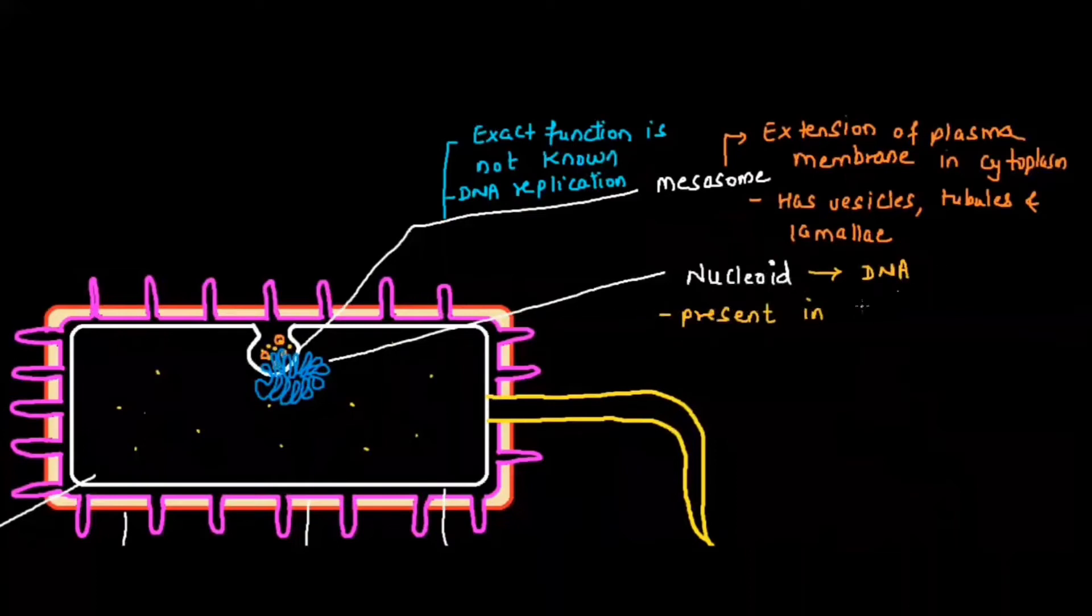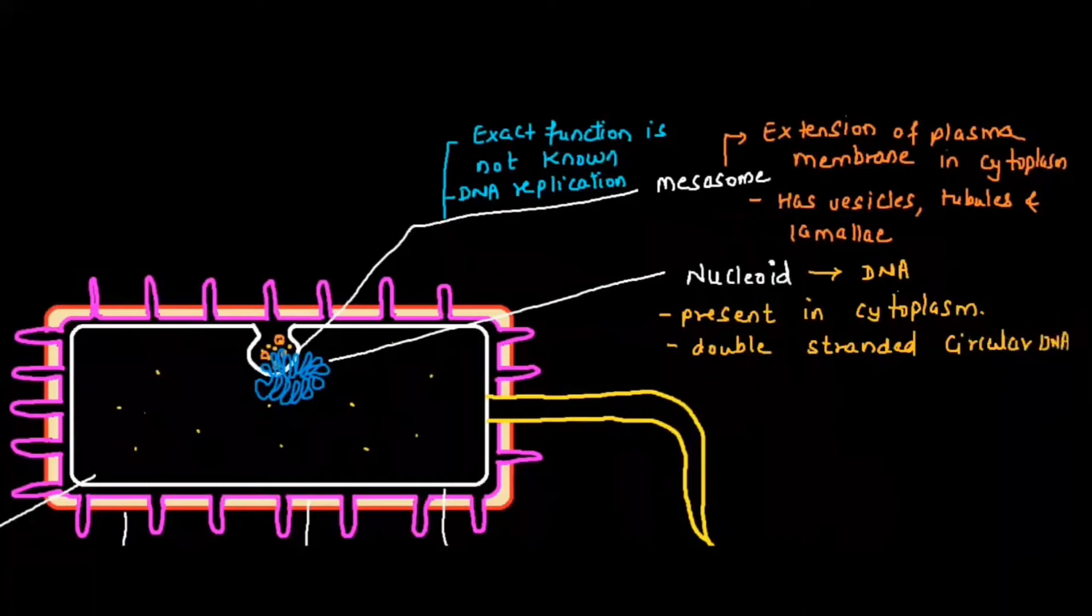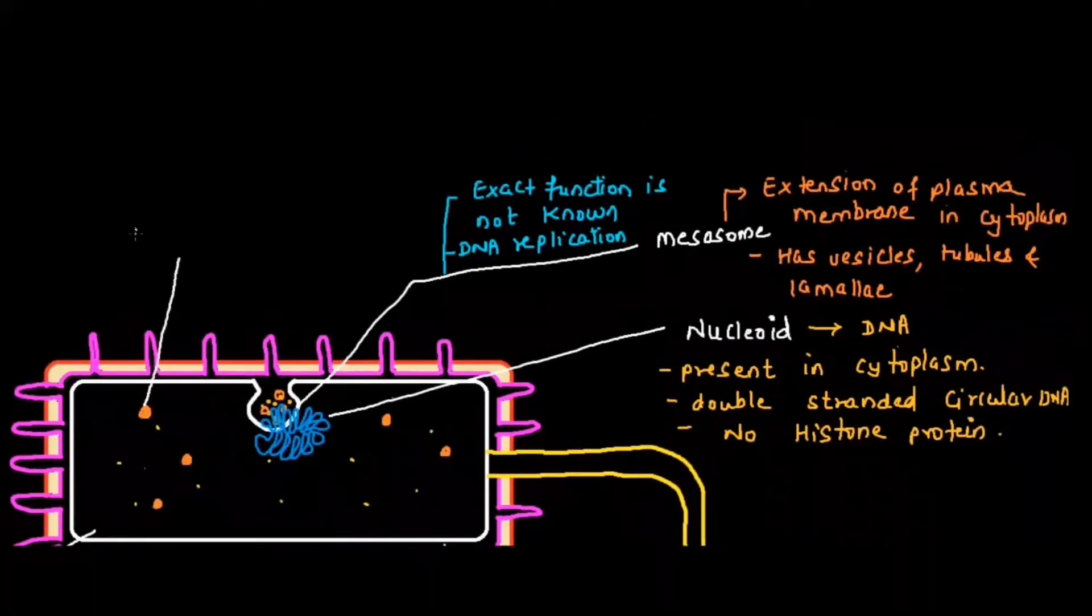This DNA is basically called nucleoid. DNA is present in the cytoplasm. It is double-stranded circular DNA. Remember, very important from exam point of view, there is no histone protein found in case of bacterial cell or prokaryotic cell. So nucleoid is double-stranded circular DNA, which is the genetic material.